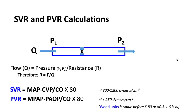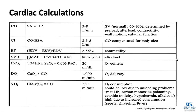PVR is: (mean pulmonary artery pressure − wedge pressure) / cardiac output × 80, converting to dynes·s·cm⁻⁵. Normally PVR is about one-eighth of SVR. In Wood units before multiplying by 80, the normal PVR is approximately 0.3 to 1.6. Pediatric and congenital heart disease cardiologists often speak in Wood units when discussing pulmonary vascular resistance.